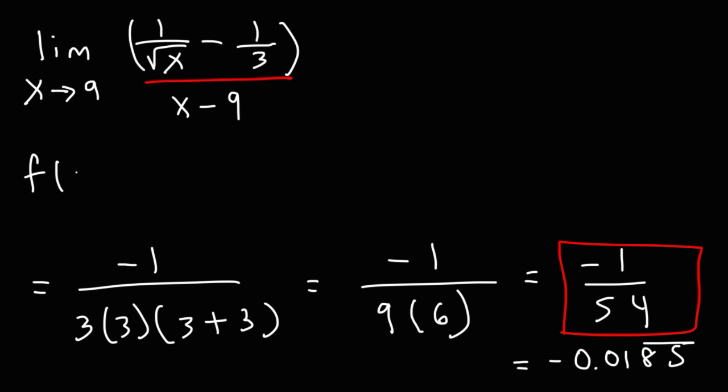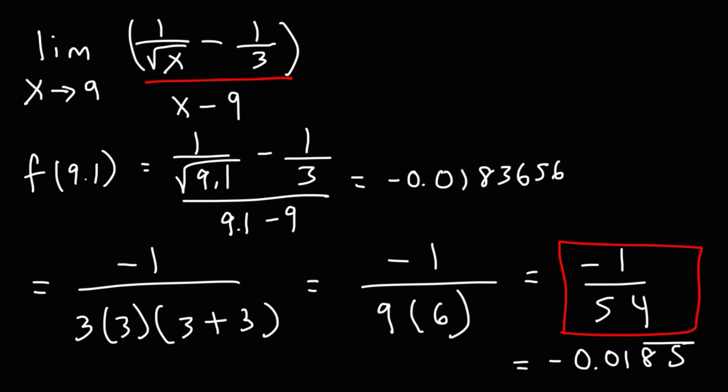Now, if we plug in 9.1 into the function. If you type this into your calculator, 1 over the square root of 9.1 minus 1 over 3 divided by 9.1 minus 9. This is going to give you negative 0.0183656. And then if you plug in 9.01, which will be this right here, this will give you negative 0.018503.